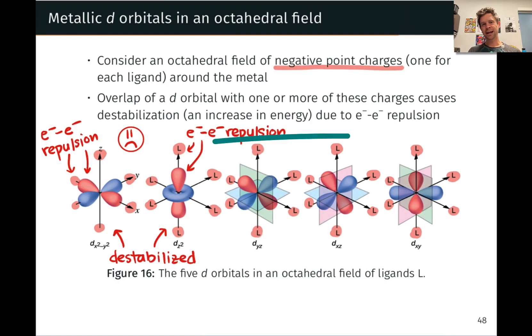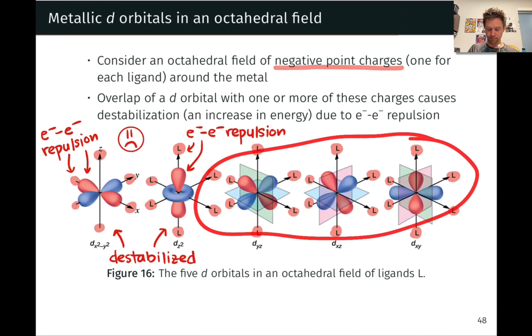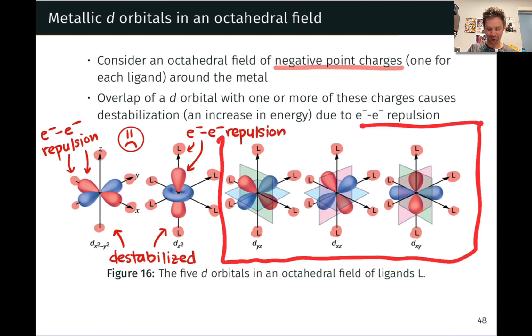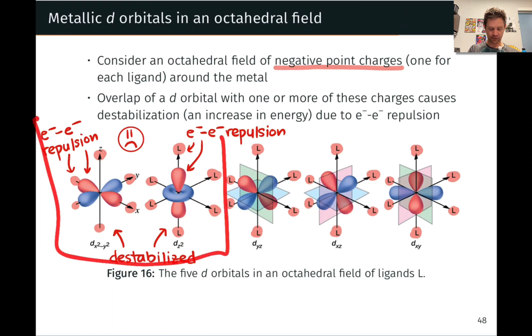If we turn our attention to the remaining three d orbitals, we'll see that the lobes are actually in between where the ligands are located. The dyz, for example, is sort of offset. We can see this lobe sort of pointed out towards us a little bit, not aligned with the x or y or z directions. And this offset in all three of these orbitals means they are not quite so destabilized when those negatively charged ligands come in. What ends up happening is that these three orbitals are relatively low in energy and these two orbitals are relatively high in energy due to that pretty severe destabilization.